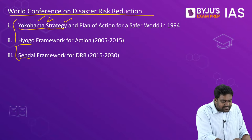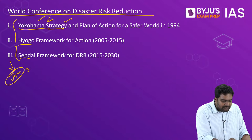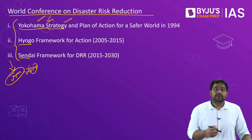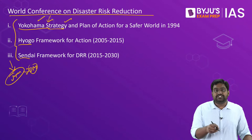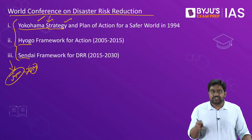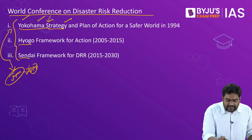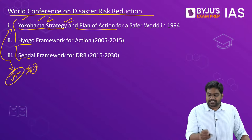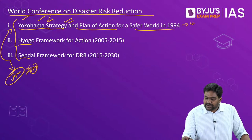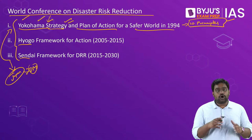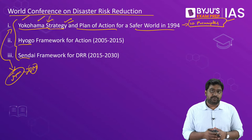Please note that all three cities — Yokohama, Hyogo, and Sendai — are in Japan. The reason is that Japan was always a leader in the field of disaster management and was even leading the global efforts through the UN. So all three global conferences on disaster management have been hosted by Japan. The first conference held at Yokohama in 1994 brought out the Yokohama Strategy that provided for 10 principles.